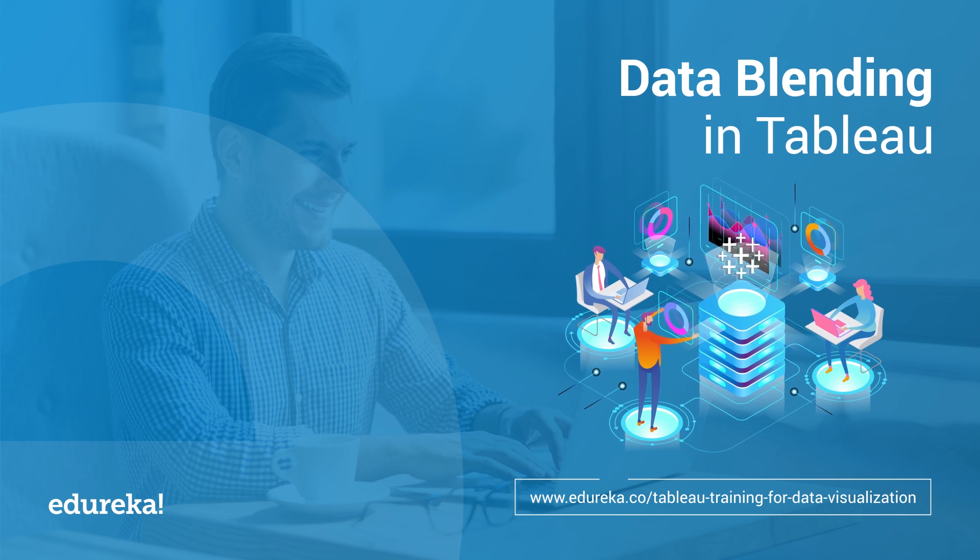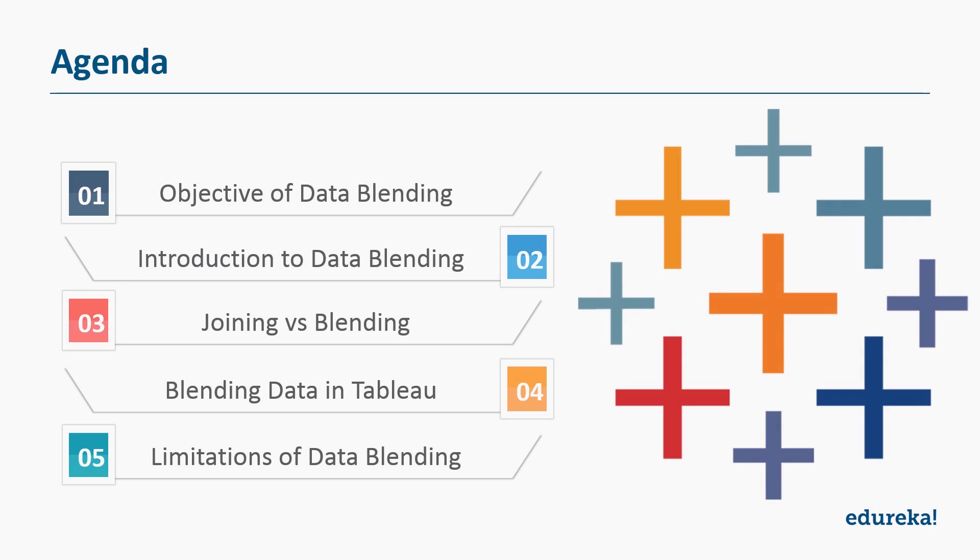But before we begin, let's discuss our agenda for today. So first of all, we're going to talk a little bit about the objective of data blending. Then we're going to talk about what data blending essentially is and how it works in Tableau. Then we're going to discuss a concept called joining and see how is it different from data blending. Then we're going to see how can you do this, it's going to be a very short demo, a few simple steps. And finally, we're going to discuss a few limitations in this process. So without much ado, let's get straight to the module.